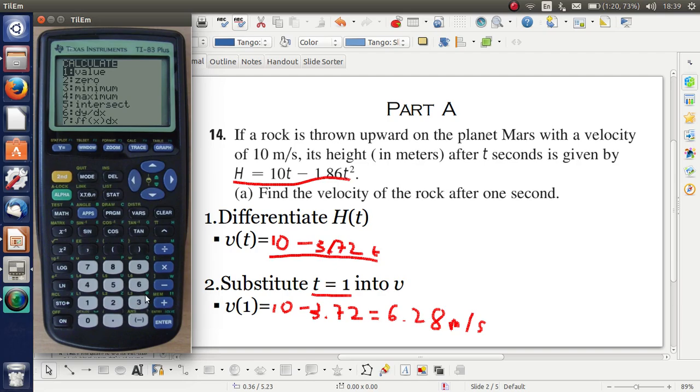And then we can also calculate the velocity at the final time. Let's press 6 again, and it's 10 divided by 1.86. Press enter, and it's minus 10, as you can see. Also, you can see that's at the point where the parabola crosses the x-axis.